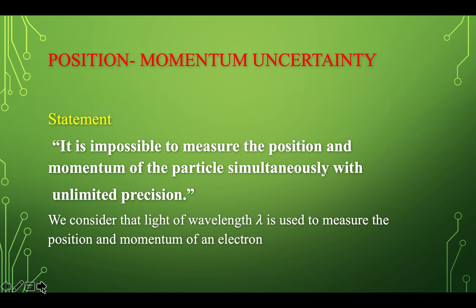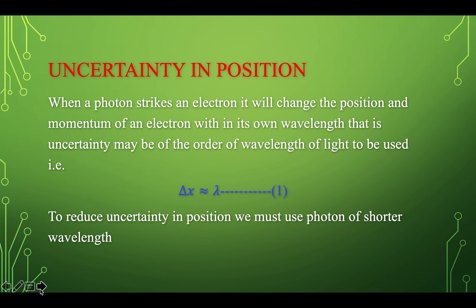First, we will discuss position-momentum uncertainty. It is impossible to measure the position and momentum of a particle simultaneously with unlimited precision. We consider that light of wavelength lambda is used to measure the position and momentum of an electron. When a photon strikes an electron, it changes the position and momentum of the electron. So the uncertainty in position may be of the order of the wavelength of light used, meaning delta X is approximately equal to lambda.